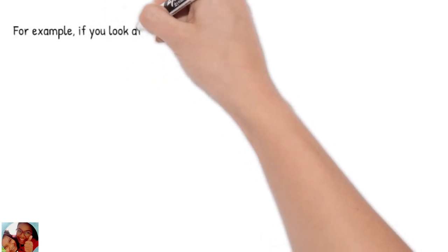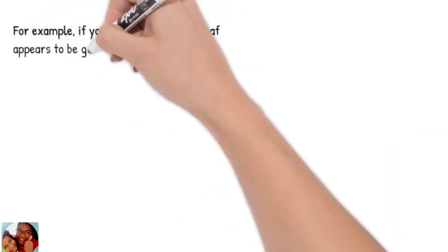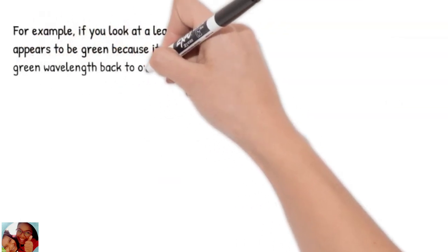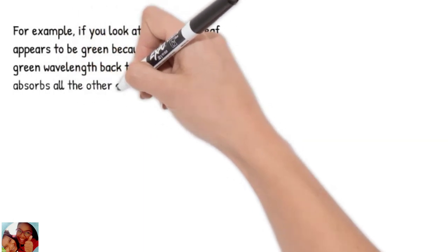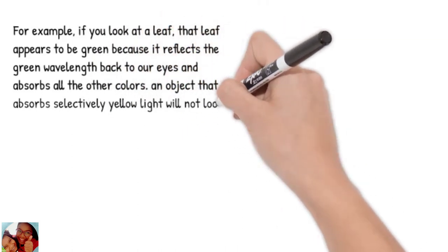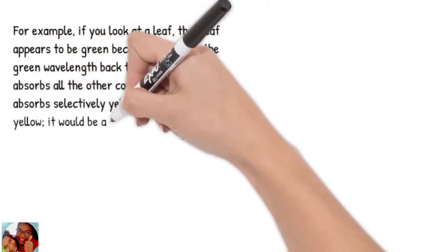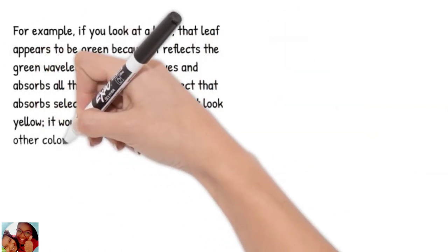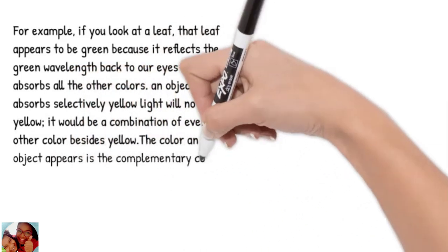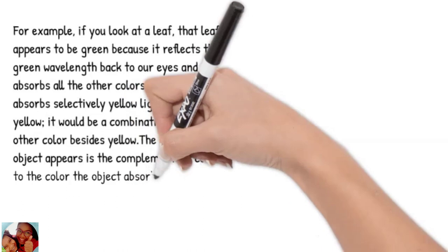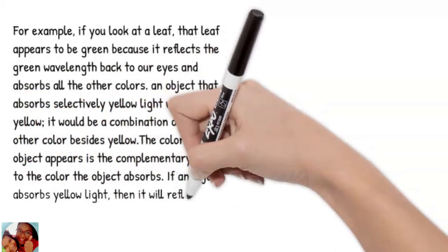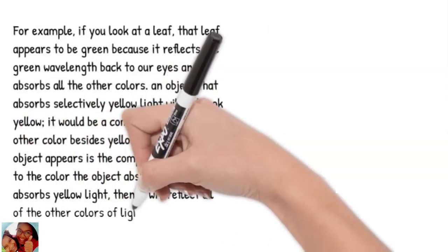For example, if you look at a leaf, the leaf appears to be green because it reflects the green wavelength back to our eyes and absorbs all the other colors. An object that absorbs yellow light will not look yellow. It would be a combination of every other color besides yellow. The color an object appears is the complementary color to the color the object absorbs. If an object absorbs yellow light, then it will reflect all of the other colors of light and it will look violet.